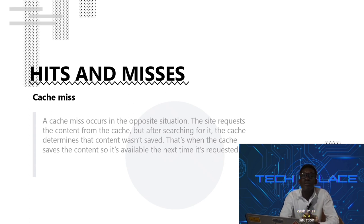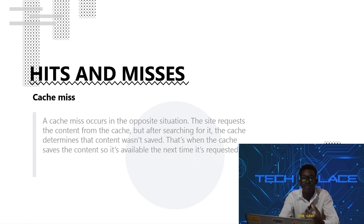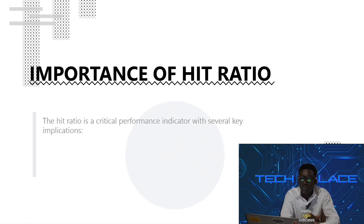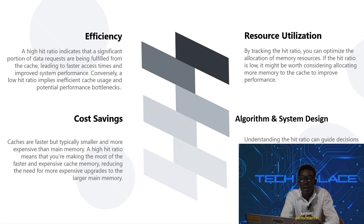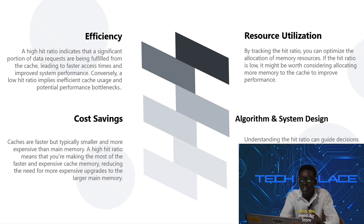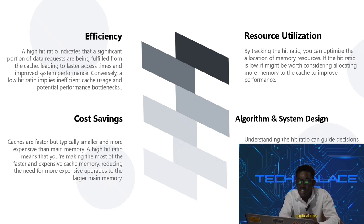A cache miss is a situation where the computer requests data from the cache but there is no data stored there. The computer then has to find the data from a slower storage, and the cache stores this data going forward. A high hit ratio indicates the cache is effectively storing frequently accessed data, resulting in improved system performance, faster response times, and smoother user experience. In terms of efficiency and cost savings, a high hit ratio means making the most of fast and expensive cache memory, reducing the need for more expensive upgrades to larger main memory. Understanding hit ratio can also guide decisions on cache replacement policies and algorithms, as different applications benefit from different cache management strategies.